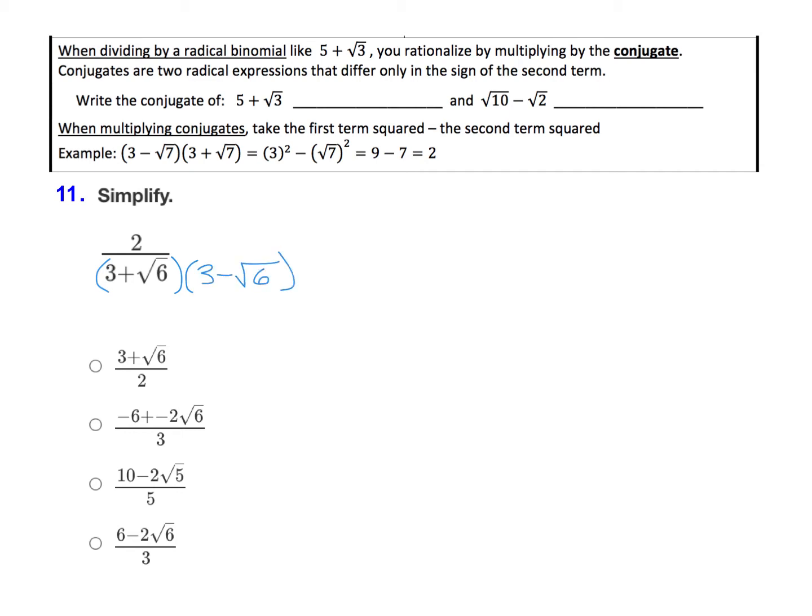And if we use our shortcut there, don't forget to multiply the top by the same thing. So we multiply both the numerator and the denominator by the conjugate of the denominator, 3 minus root 6.